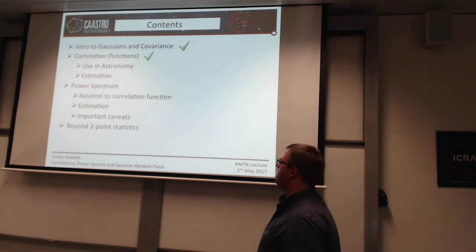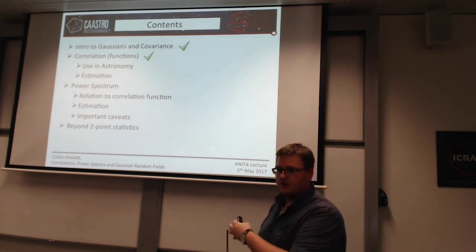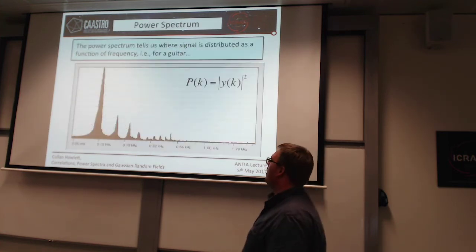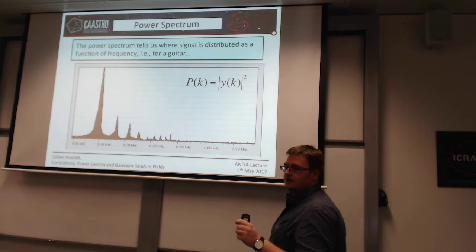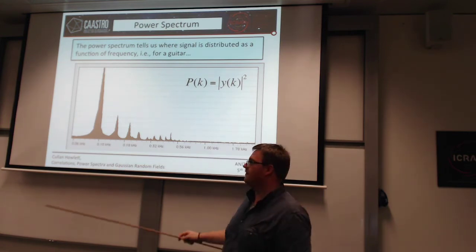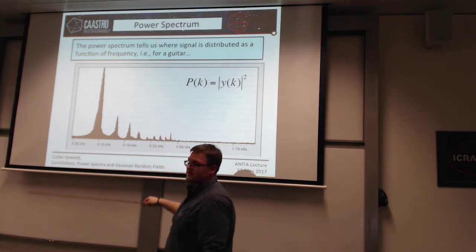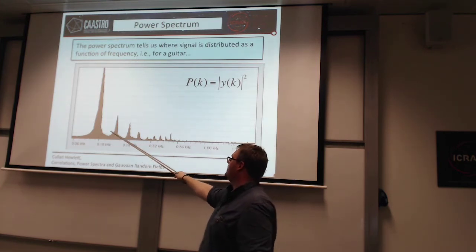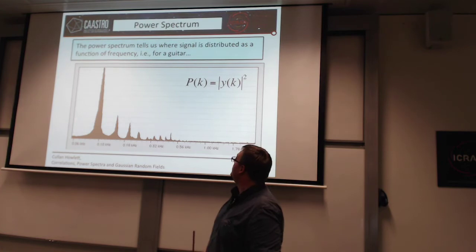Now moving on to the power spectrum. If you've ever looked at frequency analysis or signals — if you played an instrument — you might have noticed a power spectrum. The power spectrum basically tells us where signal is distributed as a function of frequency. For a guitar, you play a note and you can see that most of the power is at the fundamental frequency of that string — this could be an A for instance — and then you get harmonics at higher frequencies. This power spectrum tells you the distribution of frequencies when you play that note.